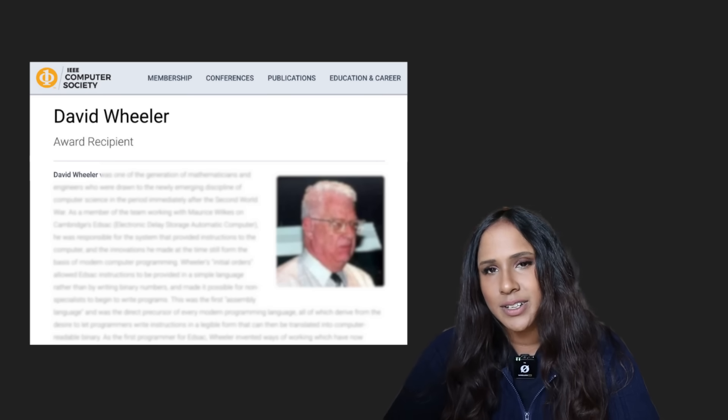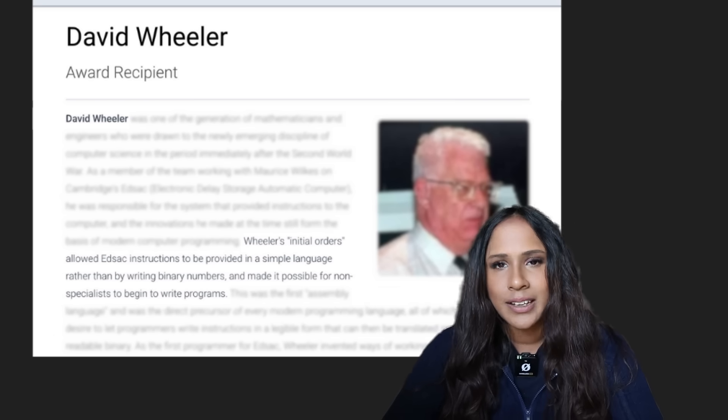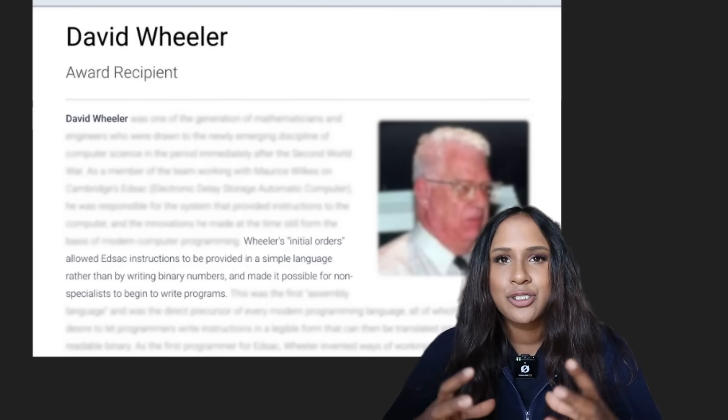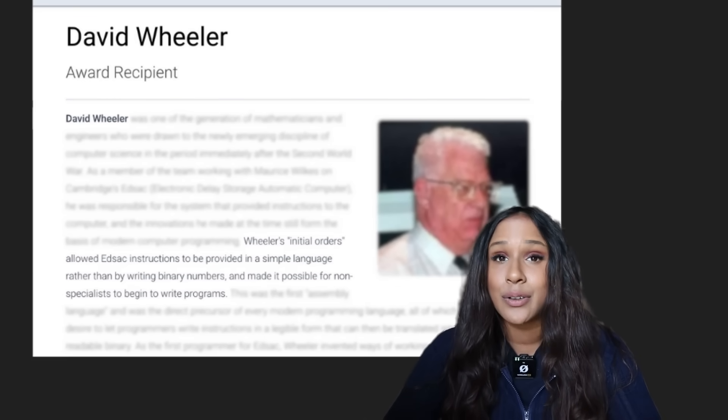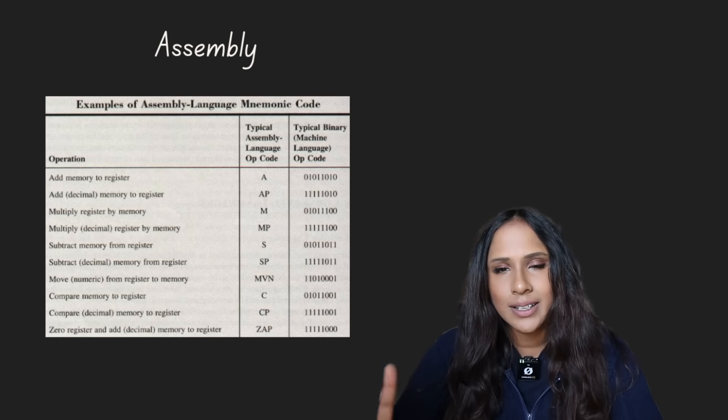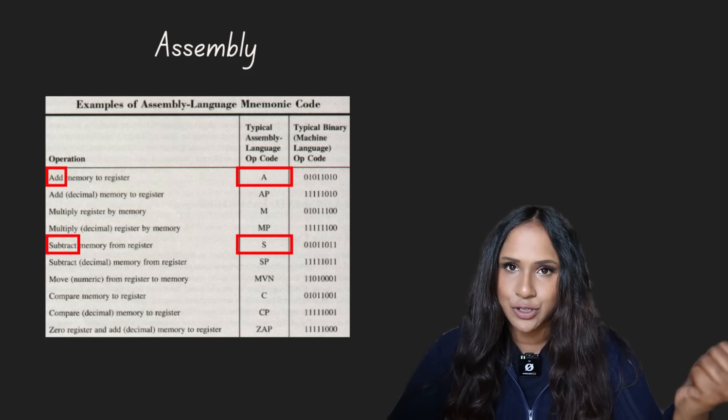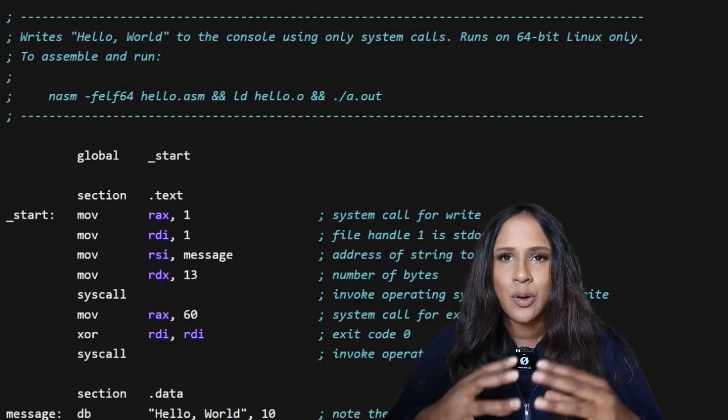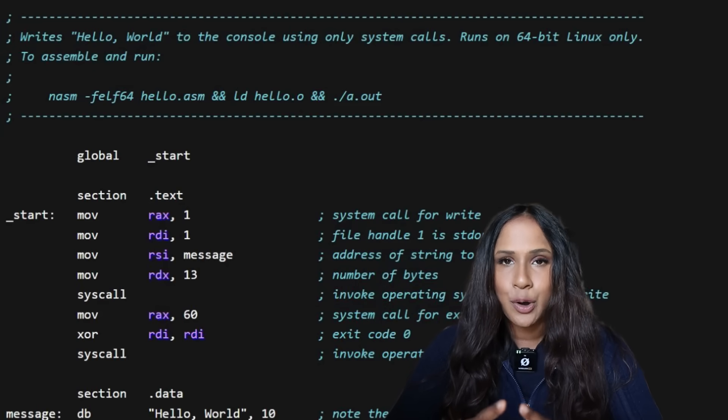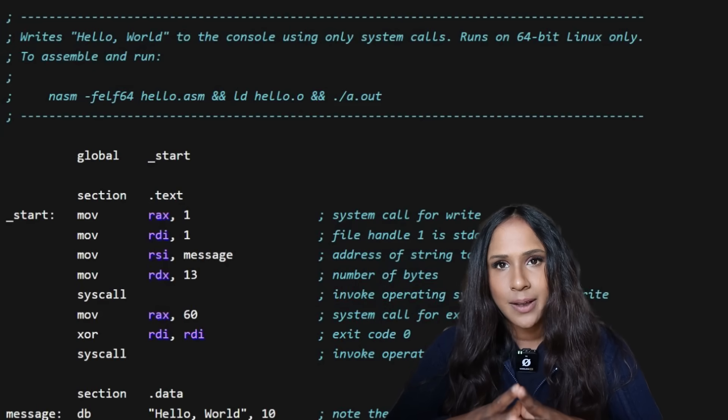That's when a man called David Wheeler entered. He created what's now recognized as the first assembly program. It was a piece of software that let programmers write instructions using letters instead of numbers. Each instruction had a single letter mnemonic, like A was for add, S was for subtract, T was for transfer, and so on. Instead of memorizing all those binary codes, a programmer could just type in these shorthand codes and Wheeler's assembly program would automatically translate them into machine code so that the EDSAC can understand that. This saved a lot of time and effort.